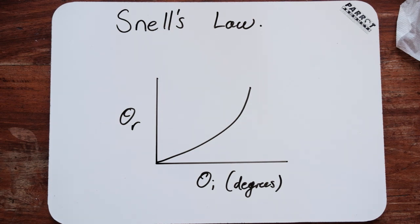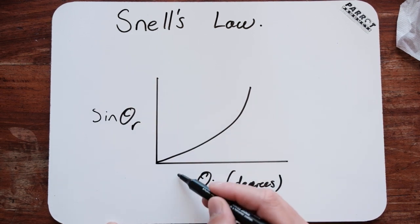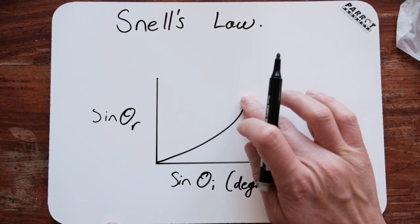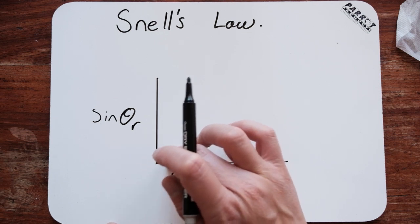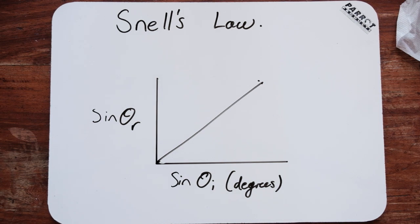So what he proposes is that in order to create a curved graph into a line graph, you use sine. So when you take the sine of these two types of angles, you get a linear relationship.